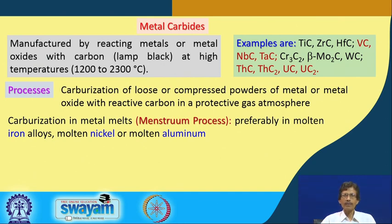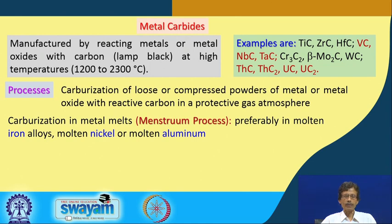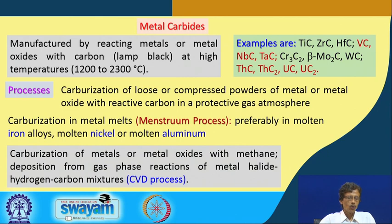For iron carbide production, the molten metal iron in a blast furnace or high-temperature furnace reacts with carbon. Not only molten iron, but molten iron alloys, molten nickel, and molten aluminum can also be used. Additionally, carburization can be achieved using methane as the carbon source.